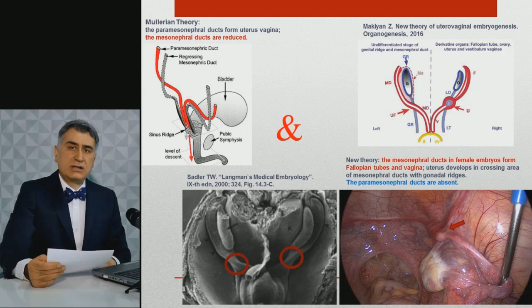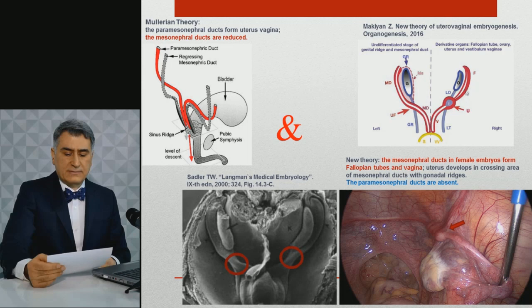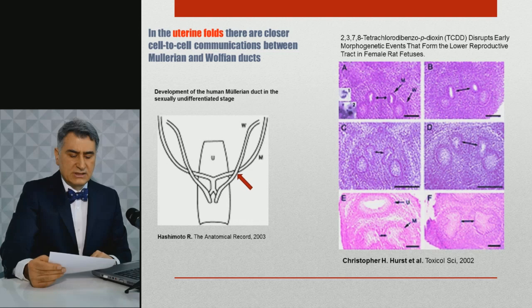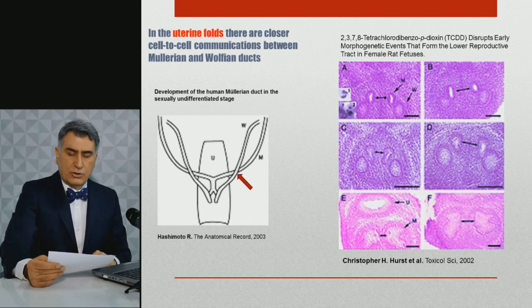A systematic comparison of uterovaginal malformations with contemporary embryological investigations allowed us to formulate a new theory of embryogenesis. In this new theory, the mesonephral ducts form the fallopian tubes and vagina, the uterus derives in the crossing area between the mesonephral ducts and the gonadal ridges, and paramesonephral ducts do not exist. Supporting evidence was found in the literature: Dr. Hashimoto, by electron microscopy, detected active cell-to-cell communications between the Müllerian ducts and Wolffian cells. Christopher Hearst investigated uterotrophic exposure to teratogens during critical periods of female rat organogenesis, providing evidence of uterine development in the area of intersection between mesonephral ducts and gonadal ridges, and fusion of both uterine faults together.